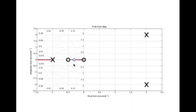Two branches start from the poles and travel across, then hit the break-in point. From there, one branch goes to one zero and the other branch goes to the other zero. One branch goes straight to infinity.